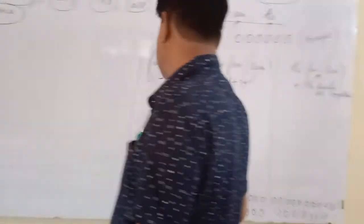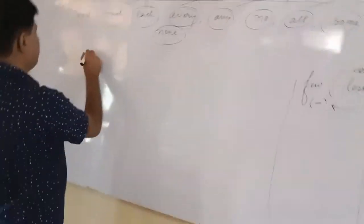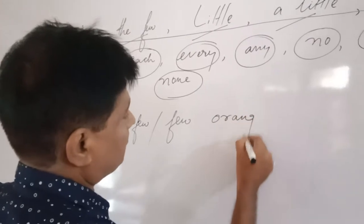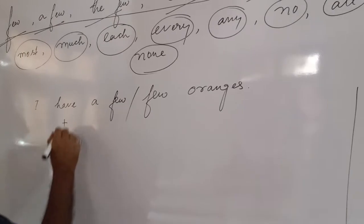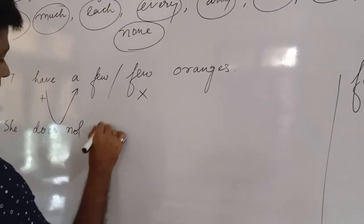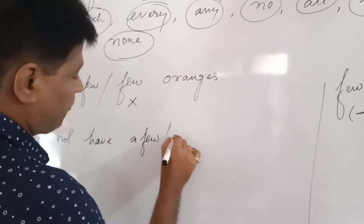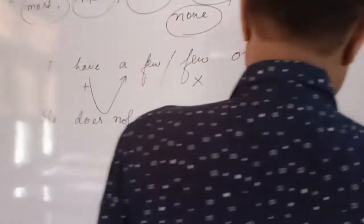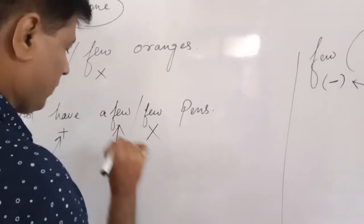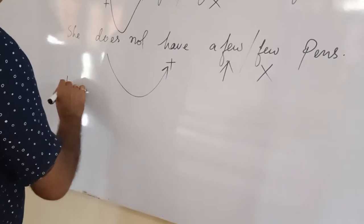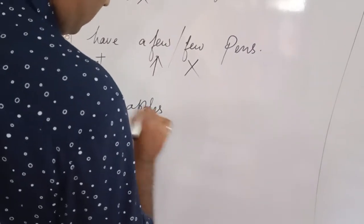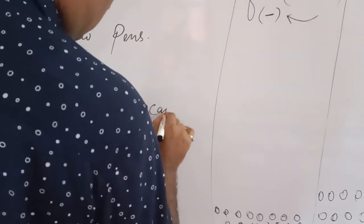When making sentences: 'I have a few oranges' — here 'have' defines a positive sense, so you use 'a few,' not 'few.' Similarly, 'She does not have a few hands' — even though the sentence is negative, 'have' still carries a positive sense, so you use 'a few,' not 'few.'